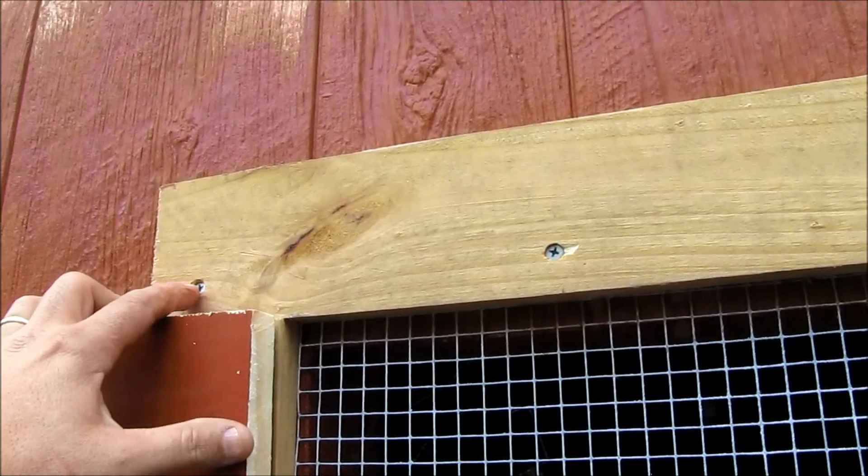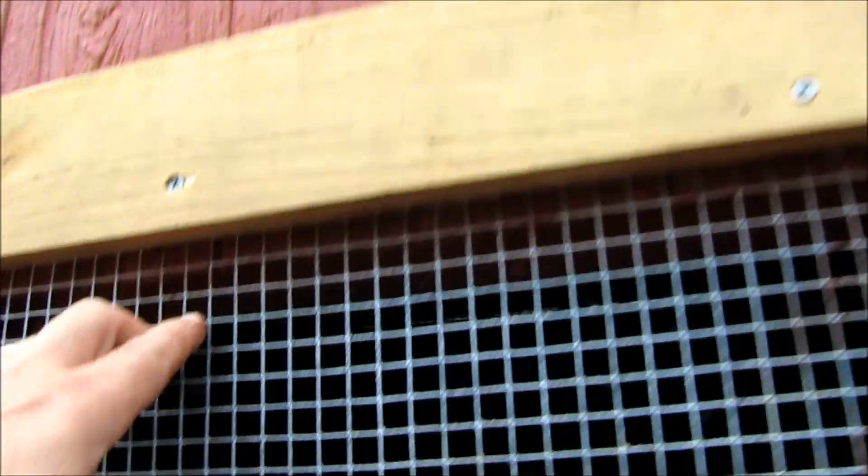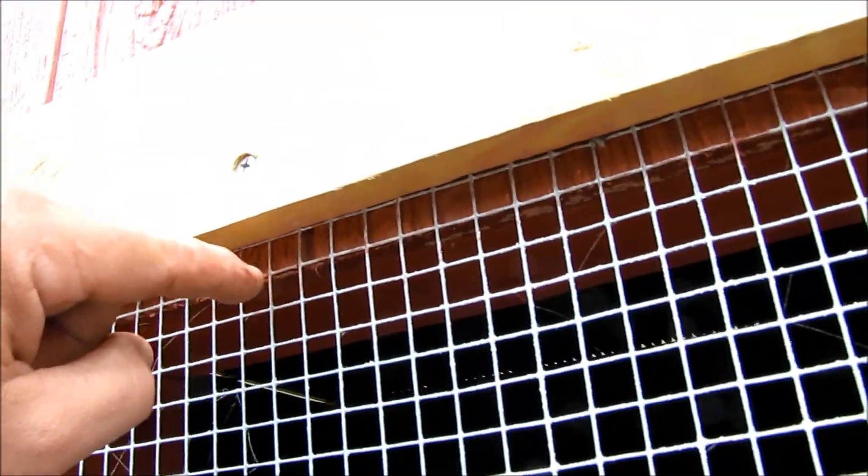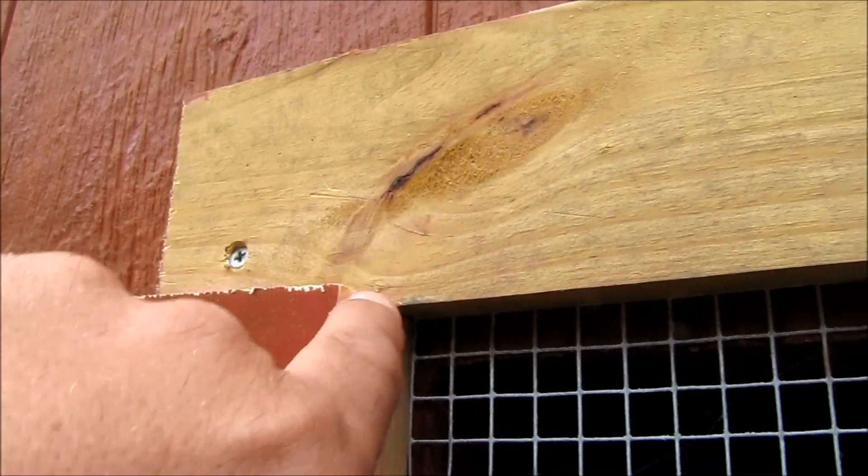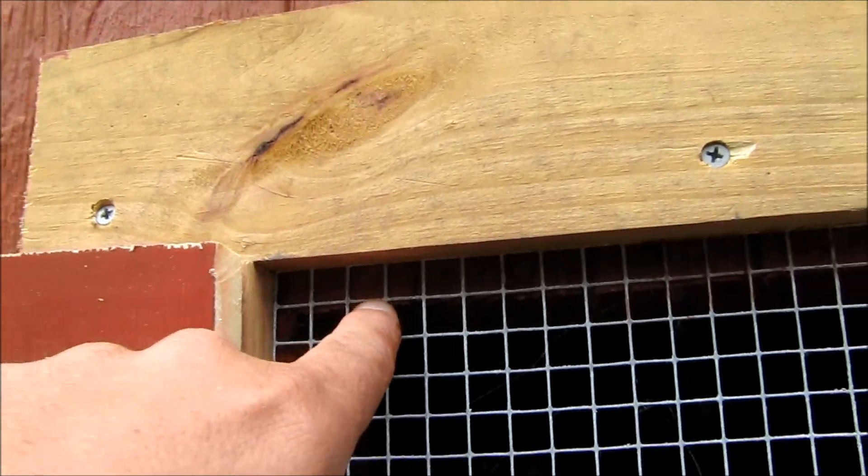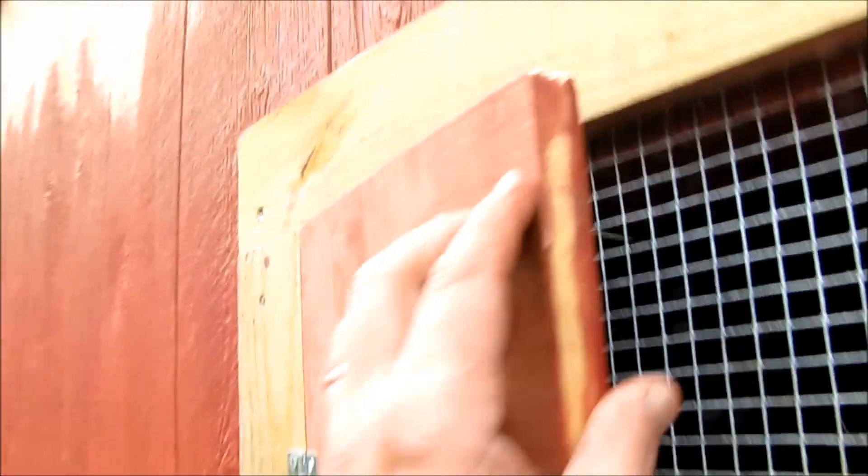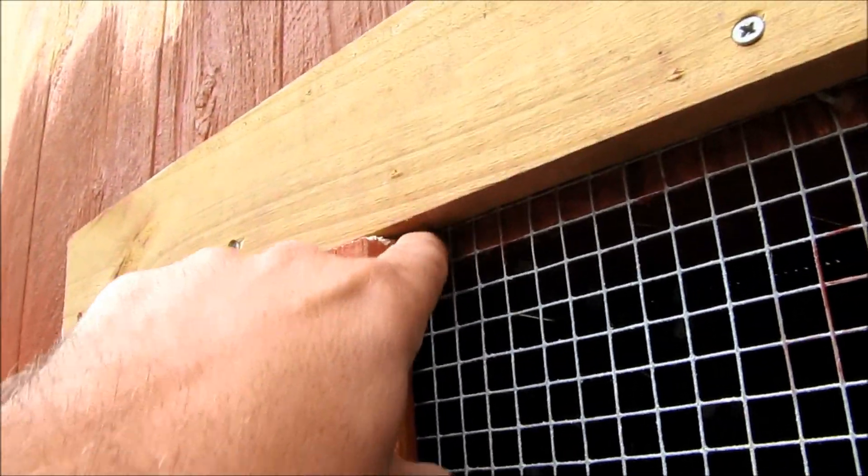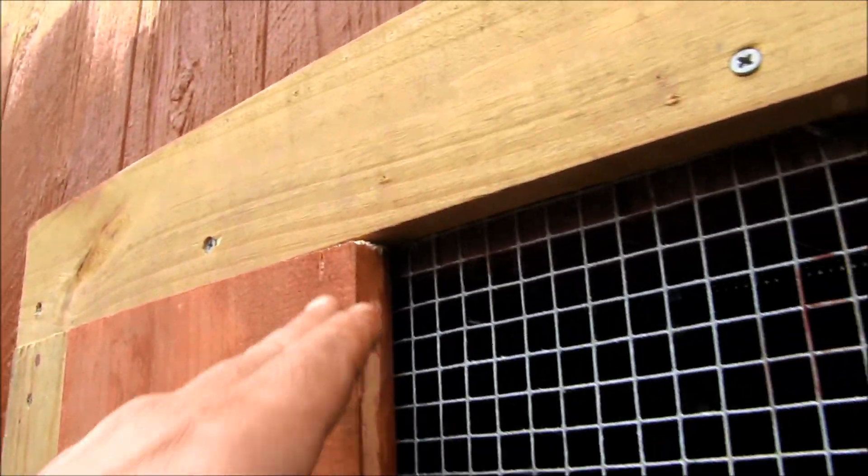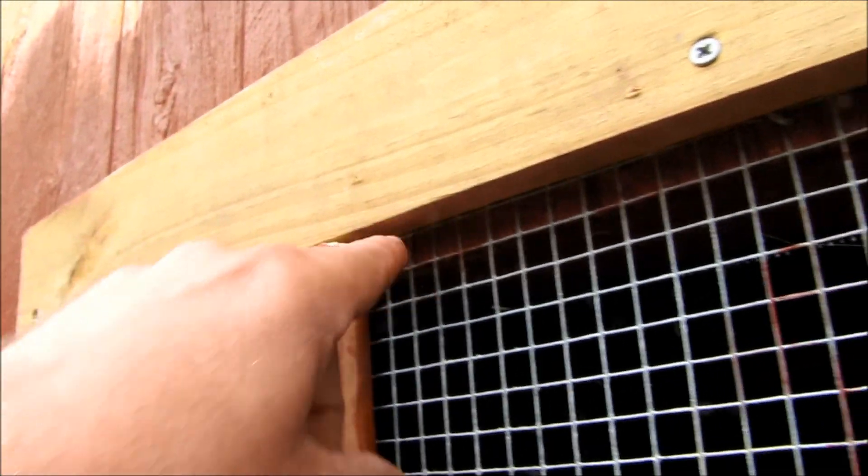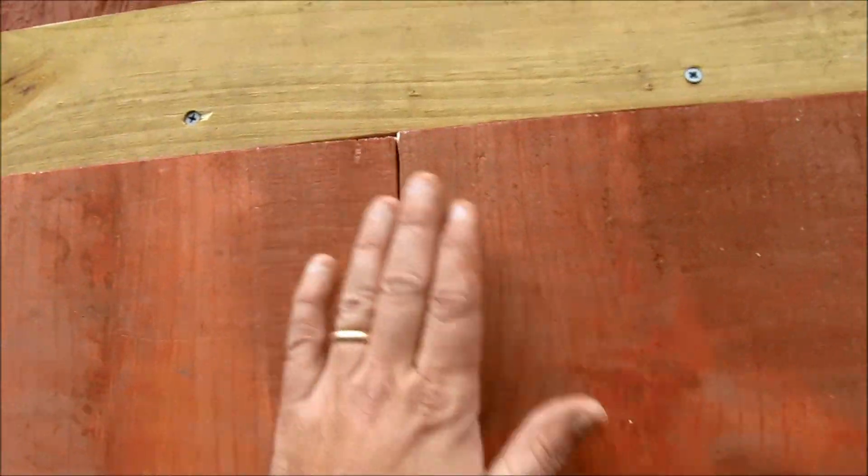I think these are two and a half inch screws. Went through here, through the wire, into the two by four. Notice the board here overlaps the inside by a half inch. Whenever you close it, you get that barrier there so whenever wind comes in during the winter time, it comes in and then hits right here. It's not straight in, and that's what it looks like.